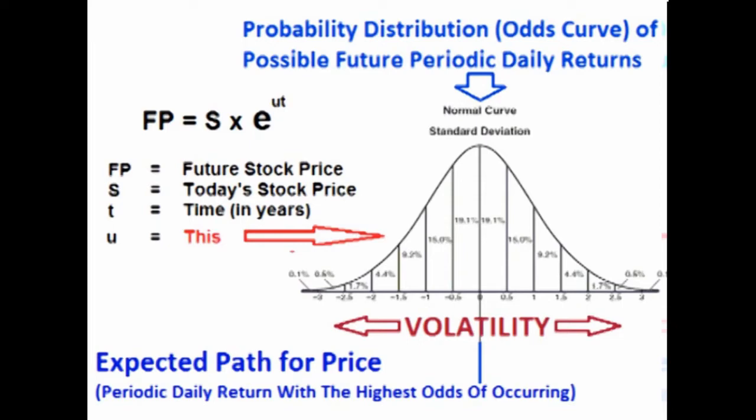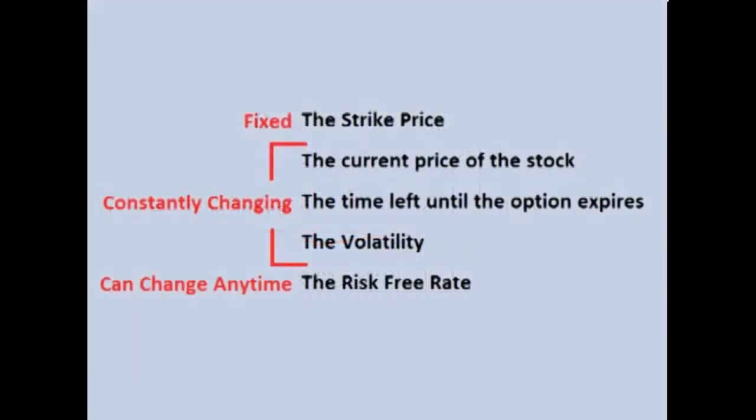We can use this to determine the probability of what the future price will be — not only for pricing options, but also for things like Monte Carlo simulation, which is used to determine possible future outcomes of price, and value at risk, which is used to determine things like expected maximum risk of loss.